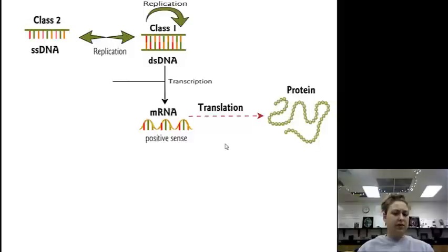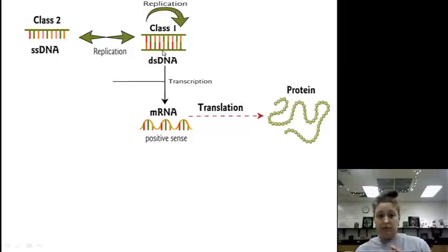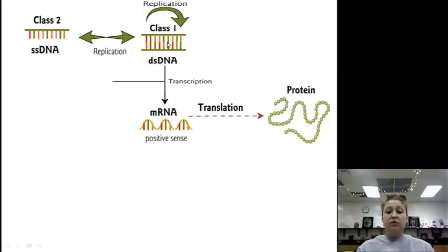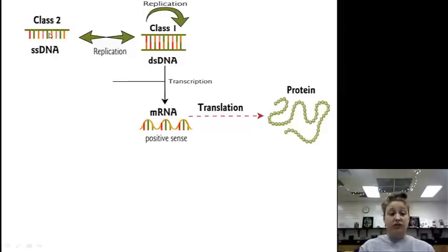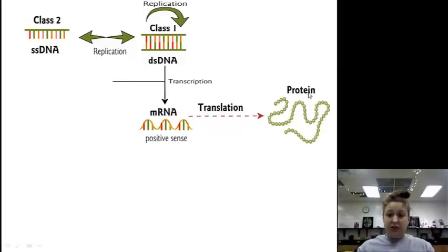Class 2 is single-stranded DNA. What has to happen? First, it has to be made into double-stranded DNA. For replication, it's then brought back to single-stranded. To make the proteins, we have to go from single-stranded DNA to double-stranded DNA. It doesn't matter if this original single-stranded is positive or negative — you still have to make the complement DNA. Then we have transcription. Class 2 single-stranded DNA: you have to go through, make it double-stranded, then go through transcription and translation.